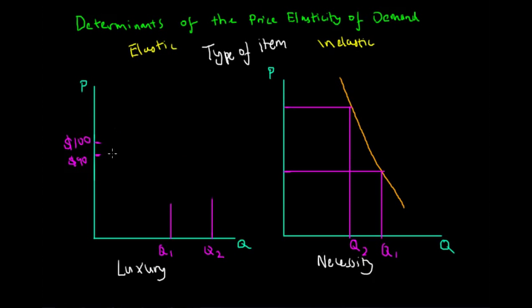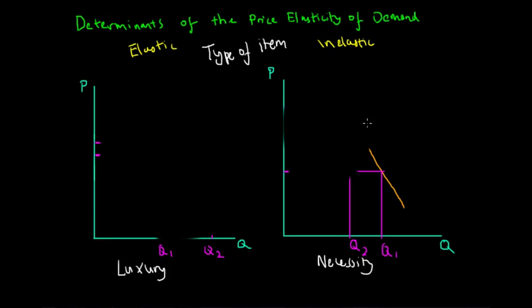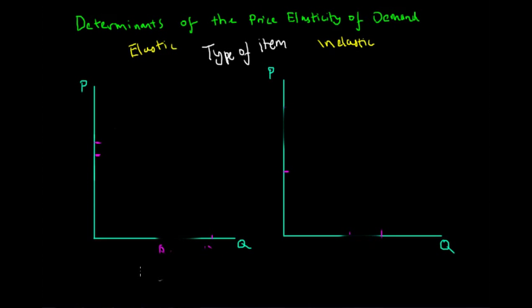The second determinant of the price elasticity of demand is whether the product has substitutability. This relates to the concept of market power. If the product has low substitutability, the producer has high market power and the demand curve of the product is fairly inelastic.